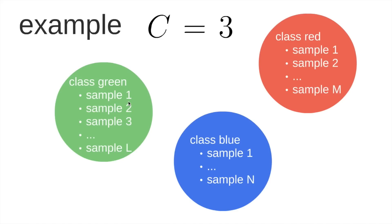The class green has 1, 2, 3, or L samples. We have the class blue from samples 1 to M, and we have the class red with samples 1 to M.